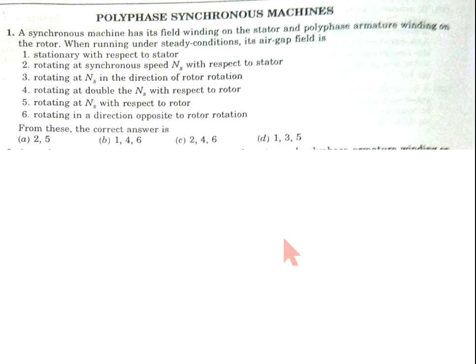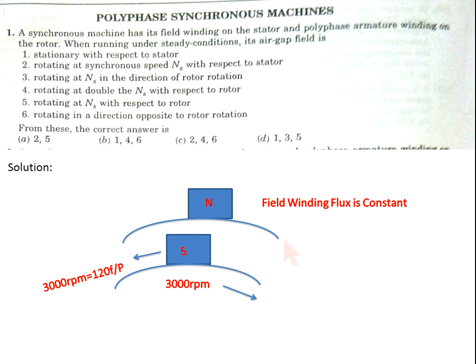Now come to question number 1. A synchronous machine has its field winding on a stator and polyphase armature winding on rotor. When running under steady state condition, its air gap field is stationary with respect to rotor. Now come to the solution. The air gap field is stationary with respect to stator.